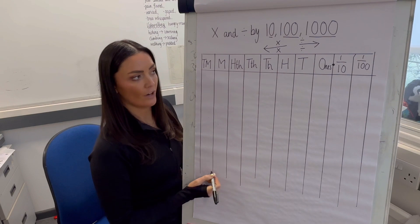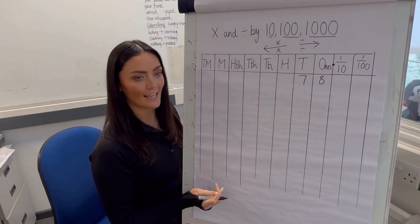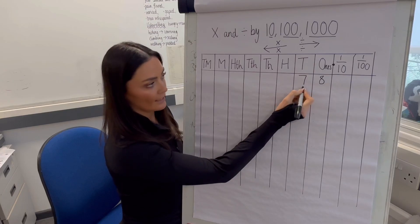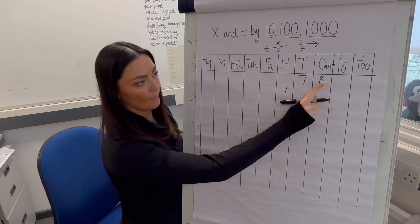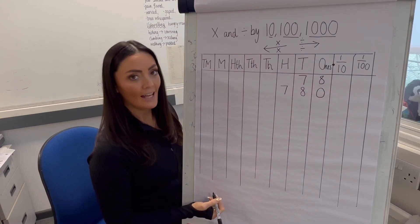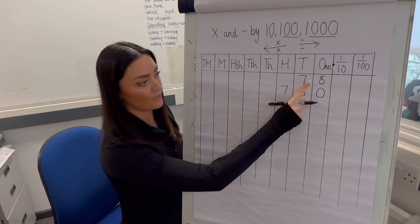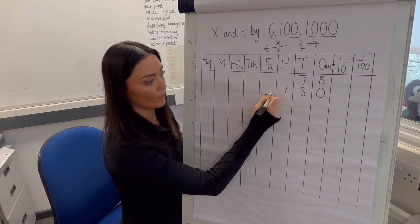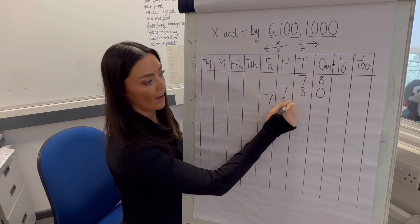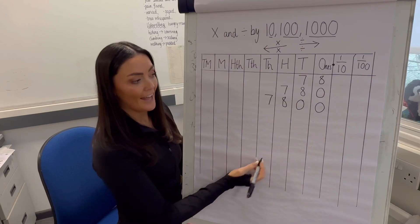For example, 78 multiplied by 10: move each digit one space to the left. The 7 tens become 7 hundreds; the 8 ones become 8 tens; then add a zero placeholder. Multiplying 78 by 100: everything moves two spaces left — the 7 becomes 7 thousands (moving 1, 2 places); the 8 becomes 8 hundreds (8 × 100 = 800); and we need two zero placeholders.